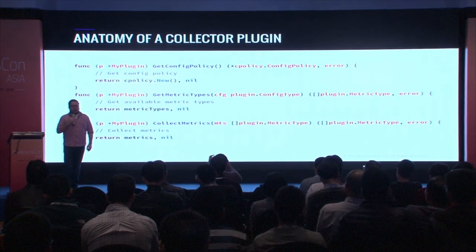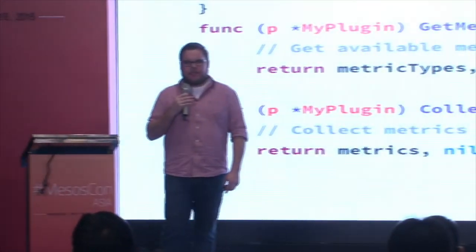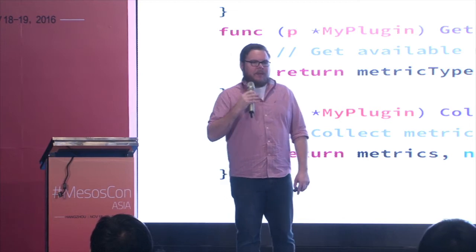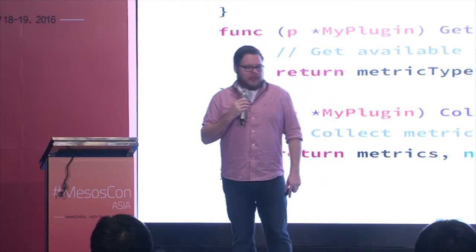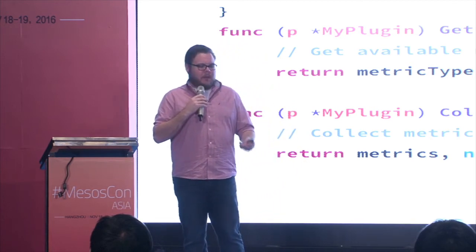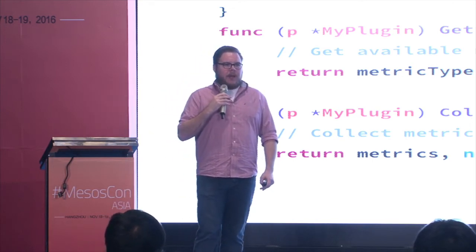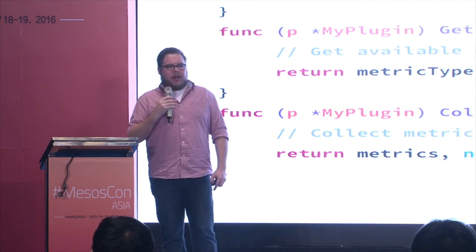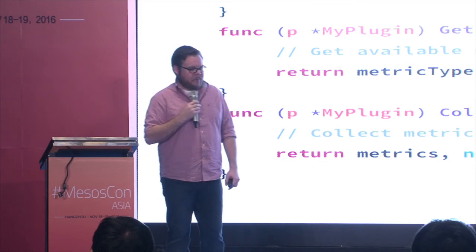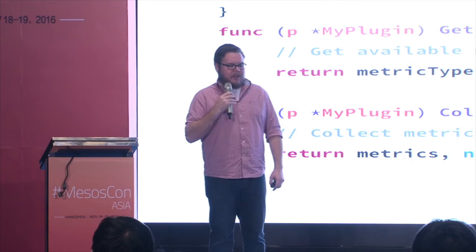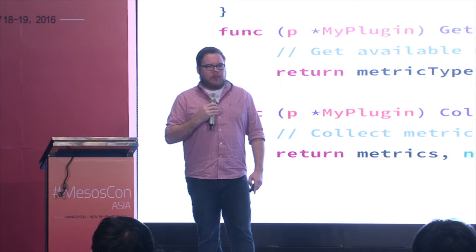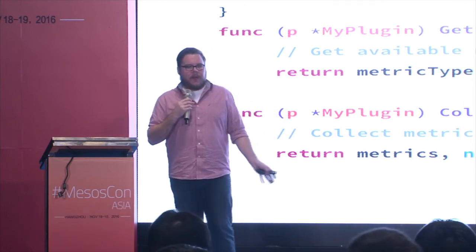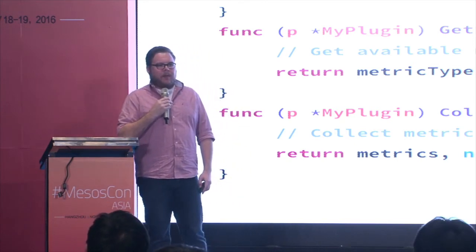A plugin is implemented in Go, or anything that understands Go's gRPC protocol. At a high level, a collector plugin requires implementing three methods: the configuration policy, the metric types — when the plugin is loaded, get metric types is called and populates the available metrics on that machine — and finally collect metrics, which is called by Snap on the interval and runs through whatever code you need to collect metrics from the system you're querying. In Mesos, this means hitting those various APIs on the interval the Snap daemon has set.